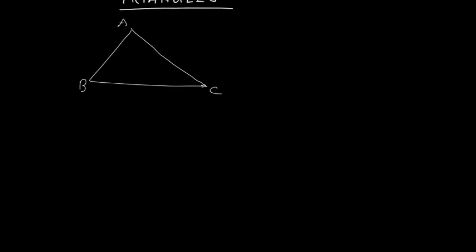One property we know is that the sum of all three angles of a triangle is 180 degrees. So angle A plus angle B plus angle C equals 180 degrees. When I use a single alphabet like angle A, I am talking about angle BAC. When I say angle B, I am talking about angle ABC. You can write in single alphabet or use the three-alphabet form.